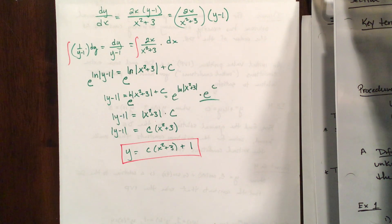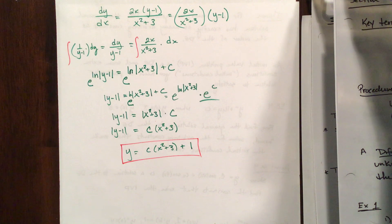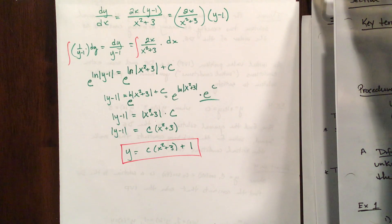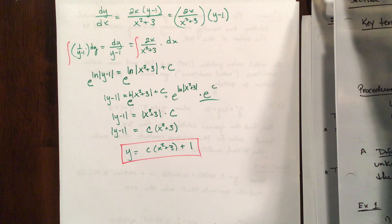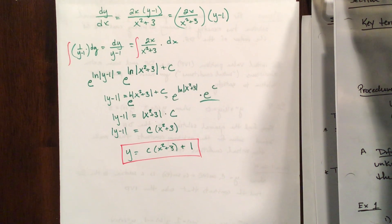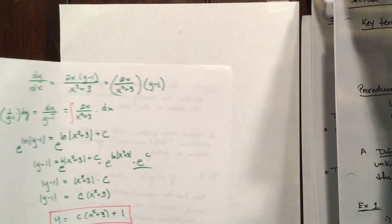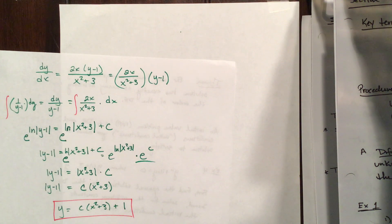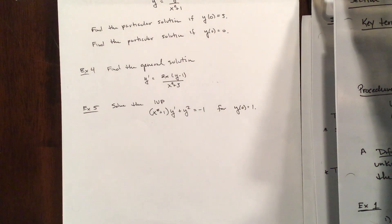We'll do this absolute value bar analysis a couple of times, but at some point we're just going to acknowledge it works and stop repeating it — provided we understand why it works. We don't use a shortcut unless we understand the reason behind it.